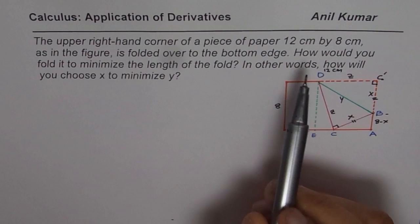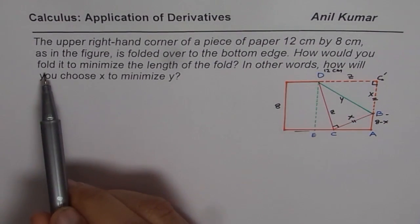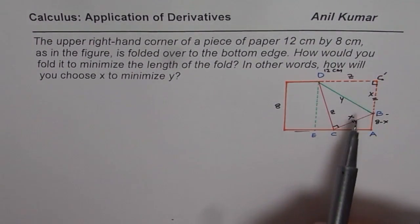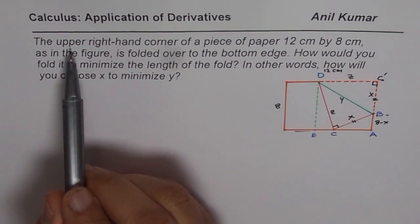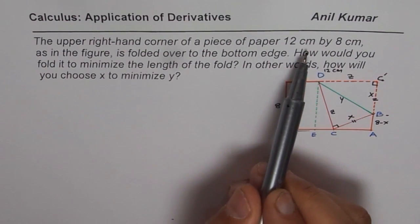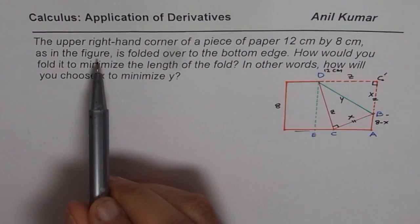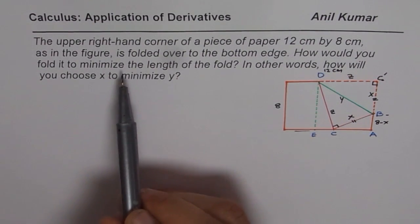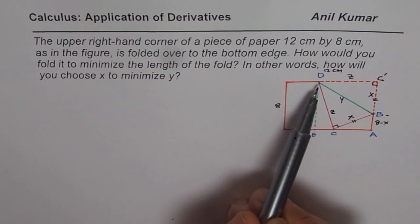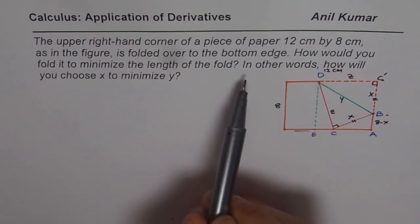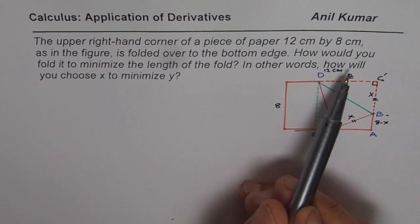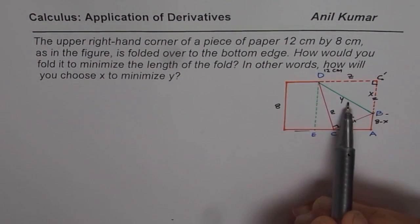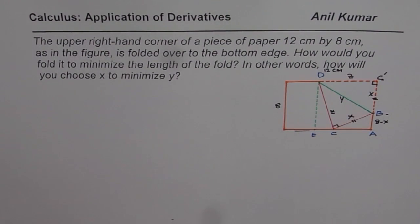So let's continue reading the question. How would you fold to minimize the length of the fold? The upper right hand corner of a piece of paper 12 cm by 8 cm is folded over to the bottom edge. How would you fold it to minimize the length of the fold? So that is the length of the fold that is to be minimized — in other words, how will you choose X to minimize Y?